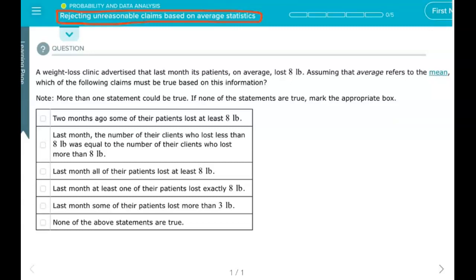All right mathematicians, here we are looking at claims based on average statistics and we're trying to reject the unreasonable ones. A weight loss clinic advertised that last month its patients on average lost 8 pounds. Assuming that average means the mean—add them all up divided by the number of numbers—which of these statements could be true? It is possible that none of them are true.